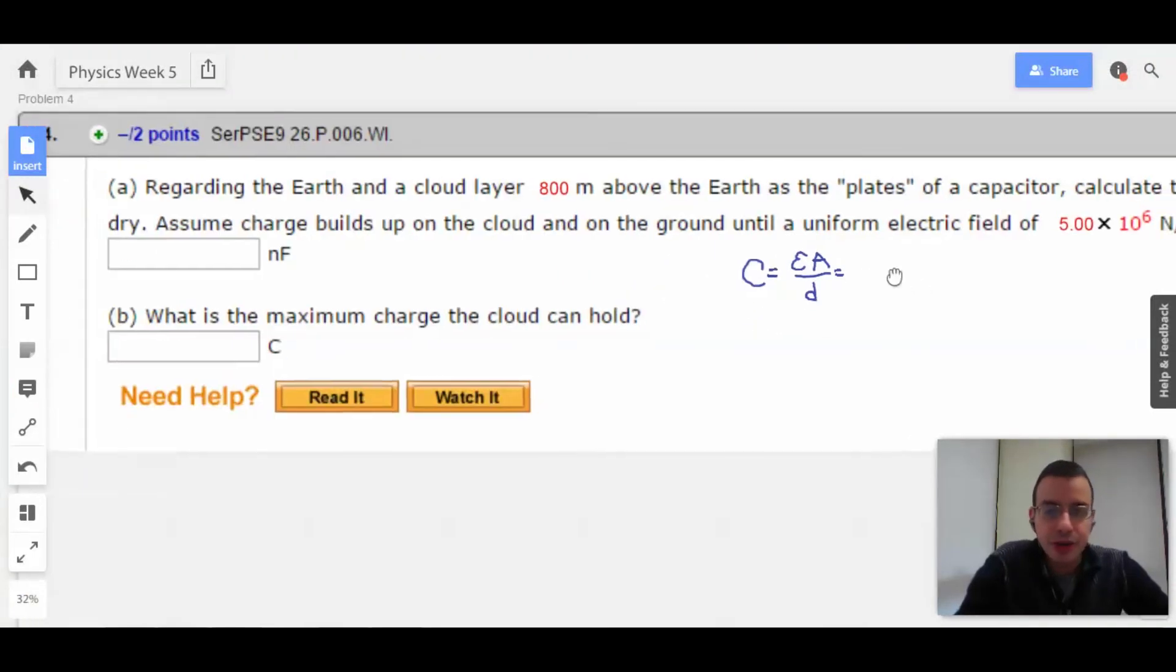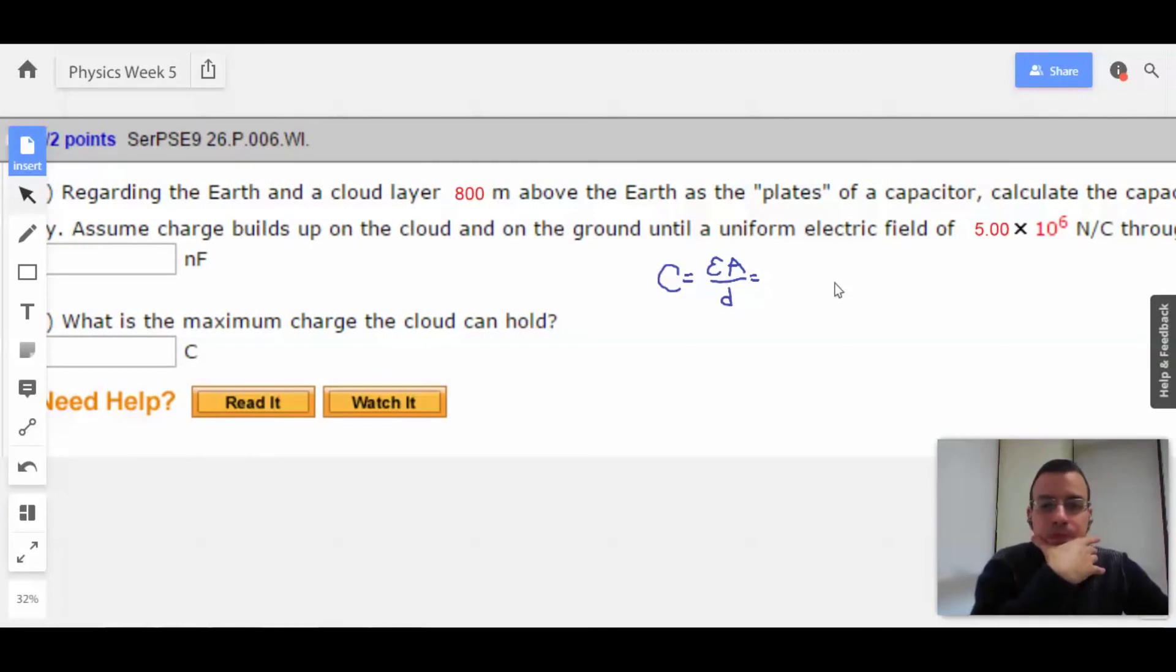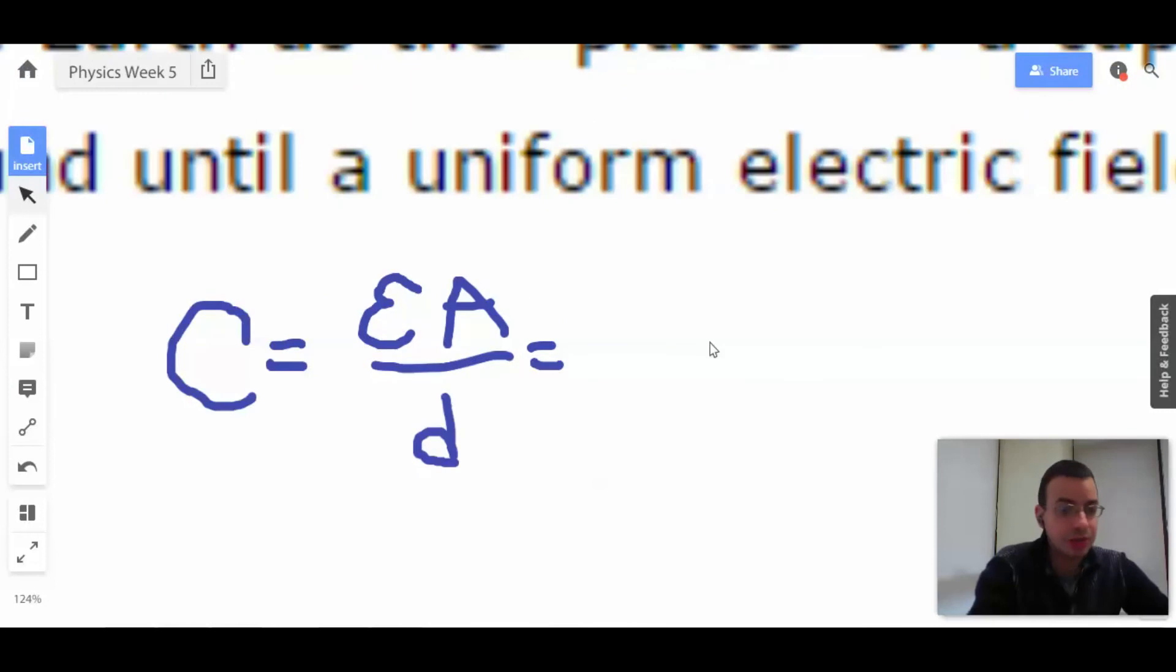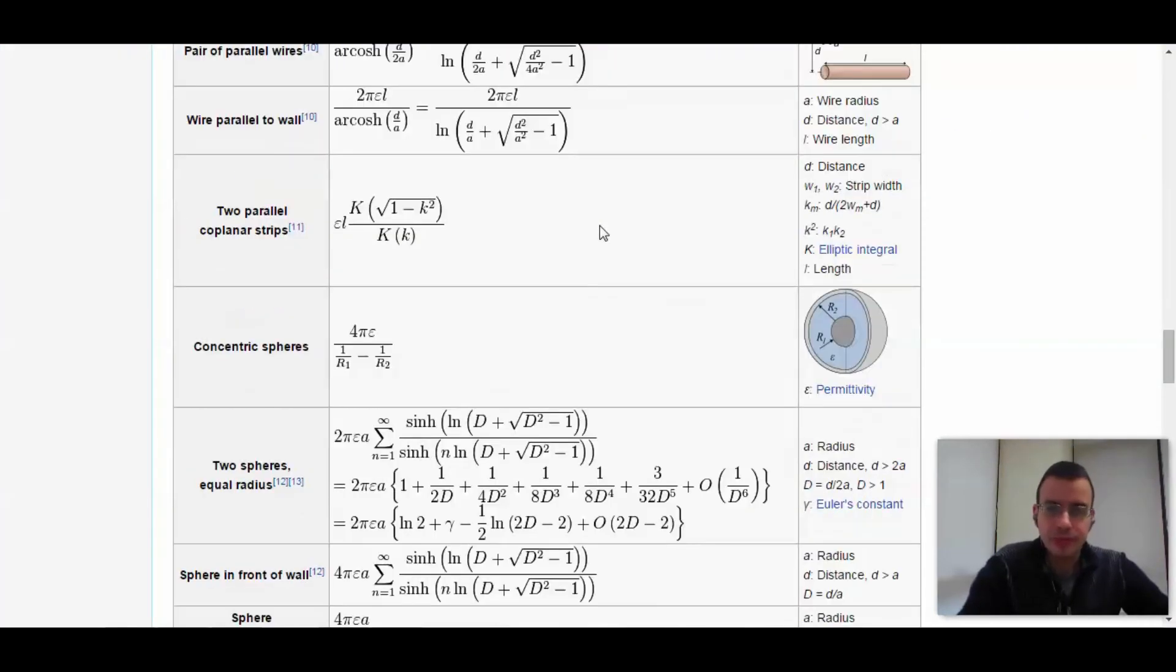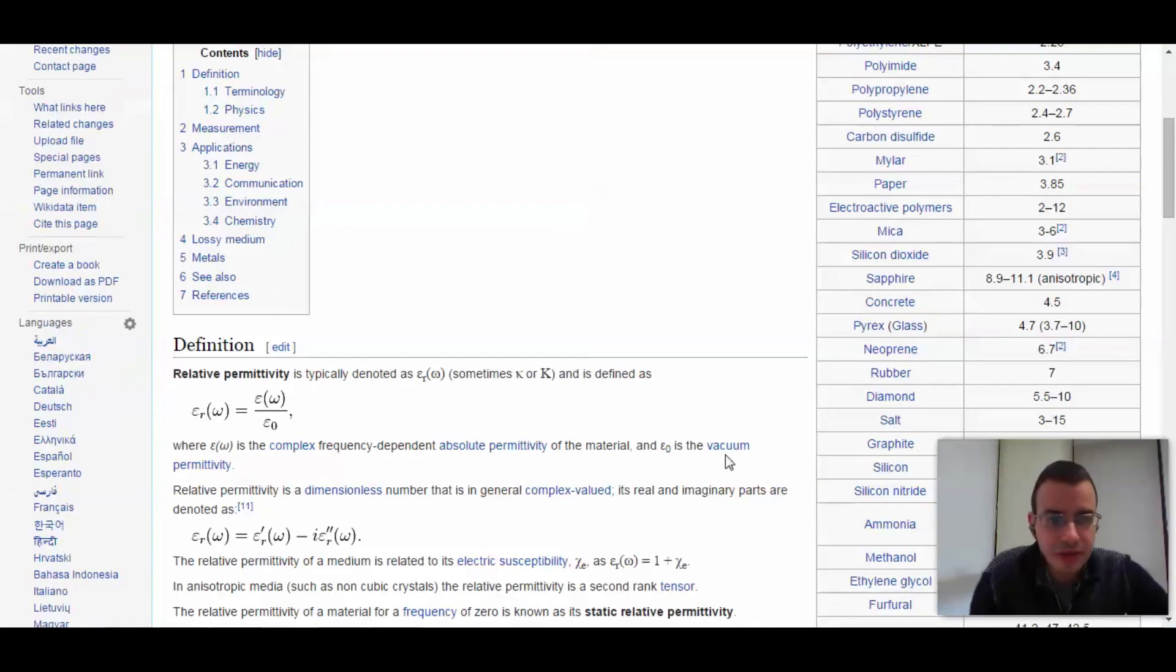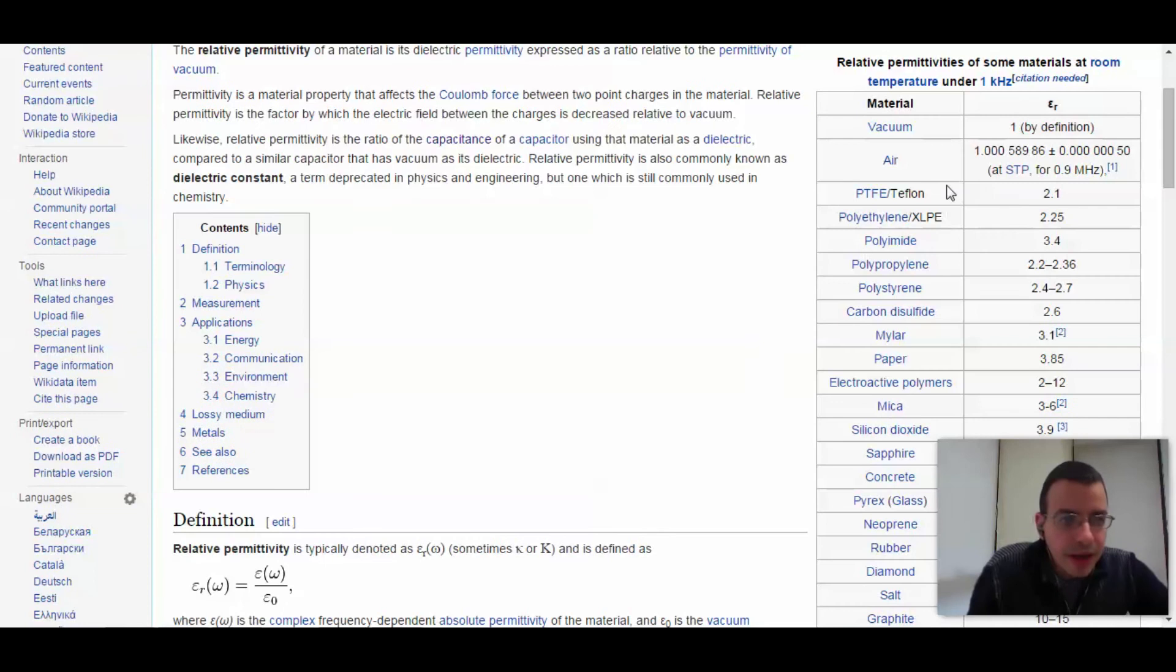So we know that epsilon, since it's dry air, is going to be approximately 1. Let's check this out. So we have relative static permittivity for air. Yep, that's about 1. Yeah, I'm totally going to call that 1.